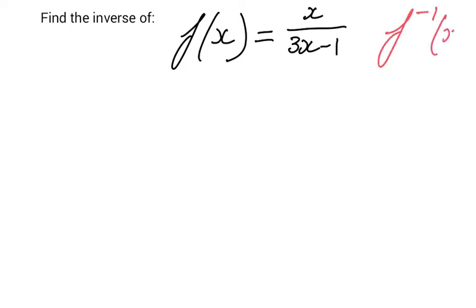Okay, now first of all, your first step—let me just put a big one there—your first step always is rather than using the f(x) notation, you've got to say y equals x over 3x minus 1. So instead of f(x), it now says y equals x over 3x minus 1.